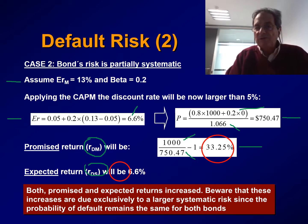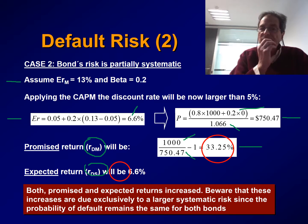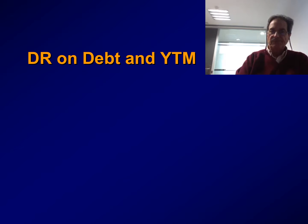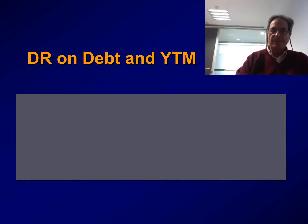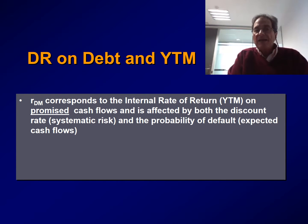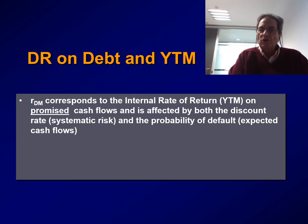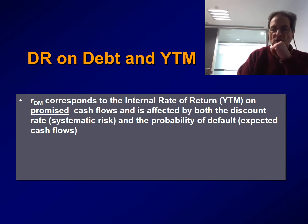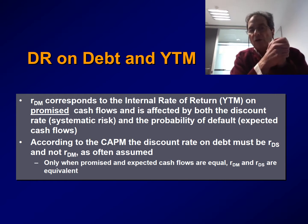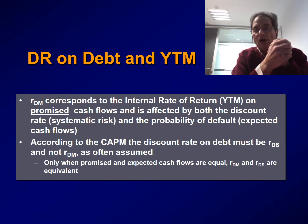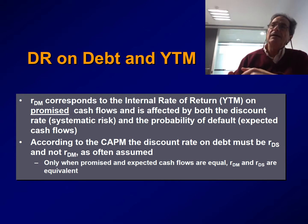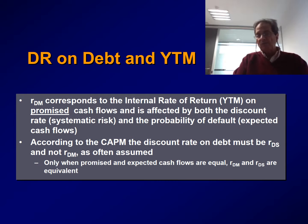Both promised and expected returns increased. Notice that these increases are due exclusively to a larger systematic risk, since the probability of default remains the same for both bonds. RDM corresponds to the internal rate of return, also called yield to maturity, on promised cash flows, and is affected by both the discount rate and the probability of default that affects the expected cash flow. According to the CAPM, the discount rate on debt should be RDS and not RDM. Only when promised and expected cash flows are equal — meaning the probability of default is zero — will RDM and RDS be the same.